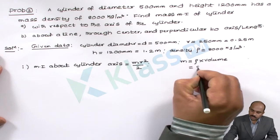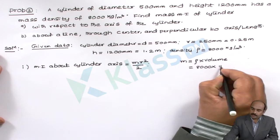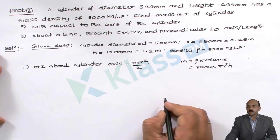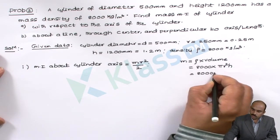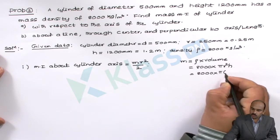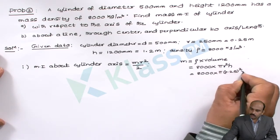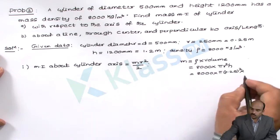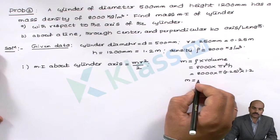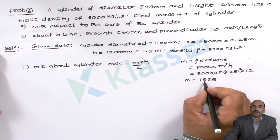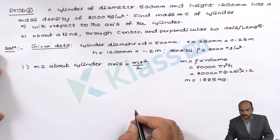Density is 8000 multiplied by the volume of the cylinder, which is πR²H. Substituting: 8000 × π × (0.25)² × 1.2. The mass we are getting is 1885 kg.